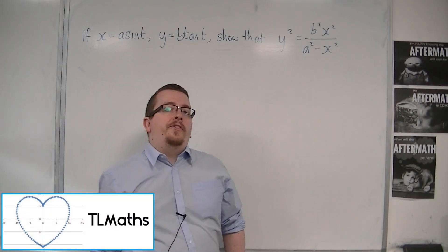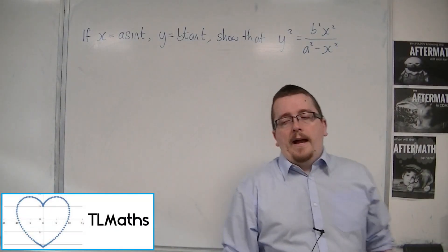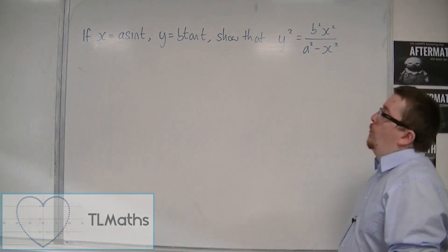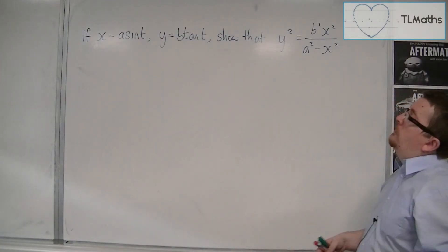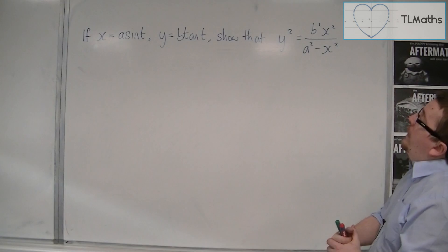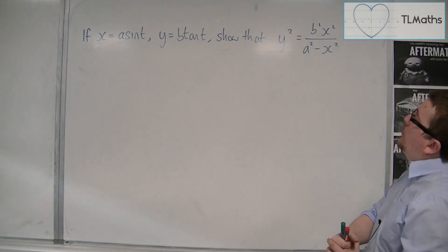Here is a slightly harder problem where we have x equals a sine t and y is equal to b tan t. We need to show that y squared is equal to b squared x squared over a squared minus x squared. This brings back some of the trig that we learnt in the previous section.